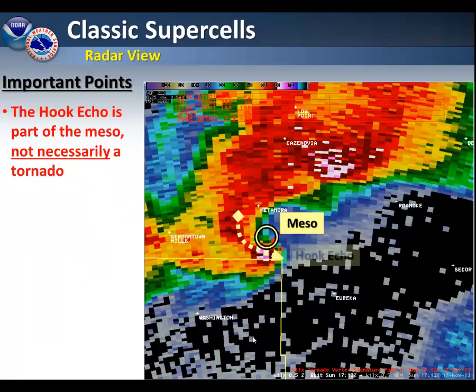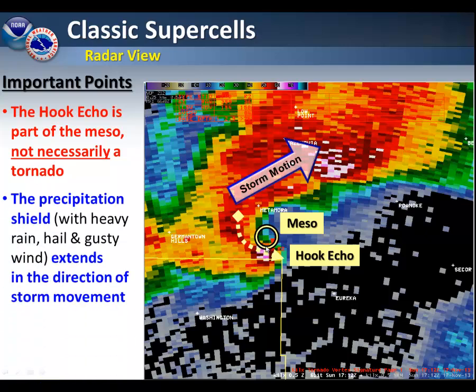This is an example of how a supercell looks on radar. This particular example was the Washington tornado from November 17, 2013. The hook echo is part of the mesocyclone, but it is not necessarily a tornado. The precipitation shield, as you can see here, is extending well to the northeast — and that actually is the direction of storm movement.